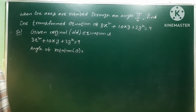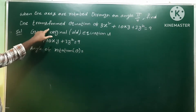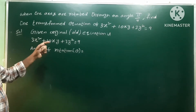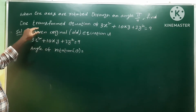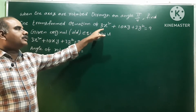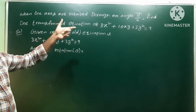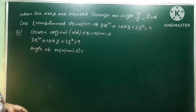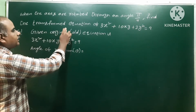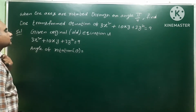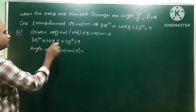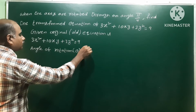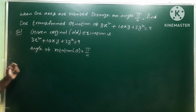When the axes are rotated to an angle π/4, find the transformed equation of 3x² + 10xy + 3y² = 9. The angle of rotation theta is equal to π/4. We need to find the transformed equation, meaning we start from the original equation 3x² + 10xy + 3y² = 9.